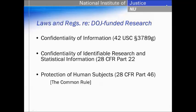On this slide you will see the laws and regulations that are related to Department of Justice funded research, and that applies to all of the agencies within the Office of Justice Programs, including the National Institute of Justice. The first two citations are for our confidentiality statute and regulations. The third citation is for the Department of Justice's Common Rule. We are a Common Rule agency, although by policy we do follow the subparts on children, prisoners, and pregnant women.